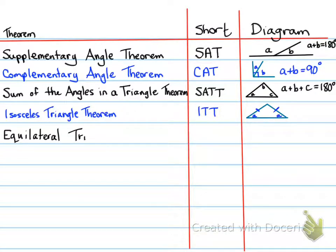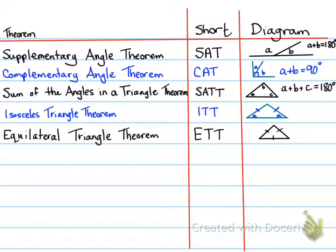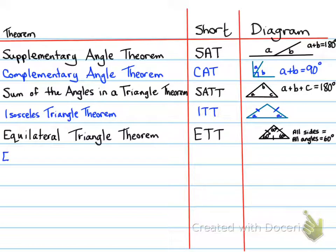Next is the Equilateral Triangle Theorem. It states that if all the sides are equal, then all the angles are also equal. Those angles are each equal to 60 degrees. So an equilateral triangle is equiangular because all the angles are equal.